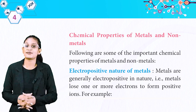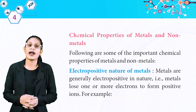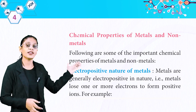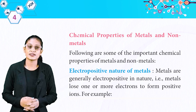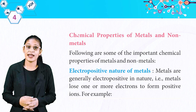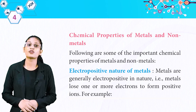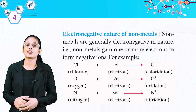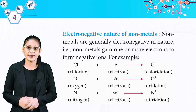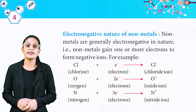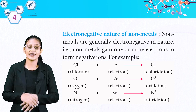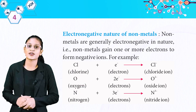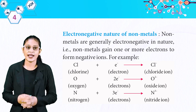Now, chemical properties of metals and non-metals. The first is the electropositive nature of metals. Metals are generally electropositive in nature — that means metals lose one or more electrons to form positive ions. Non-metals are generally electronegative in nature — that means non-metals gain one or more electrons to form negative ions. For example, oxygen gains electrons after reaction to form oxide ions. That's how non-metals form negative ions.